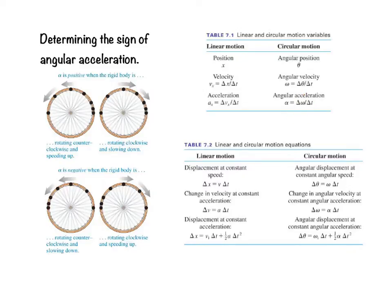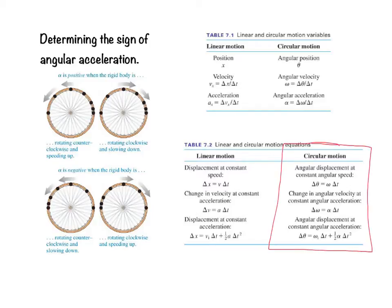Just as there are analogies between variables of linear and circular motion, there are also analogies between their kinematic equations. Displacement at constant speed corresponds to angular displacement at constant angular speed. Change in velocity at constant acceleration corresponds to change in angular velocity at constant angular acceleration. Paying attention to these analogs between linear and rotational motion is something you'll want to do.